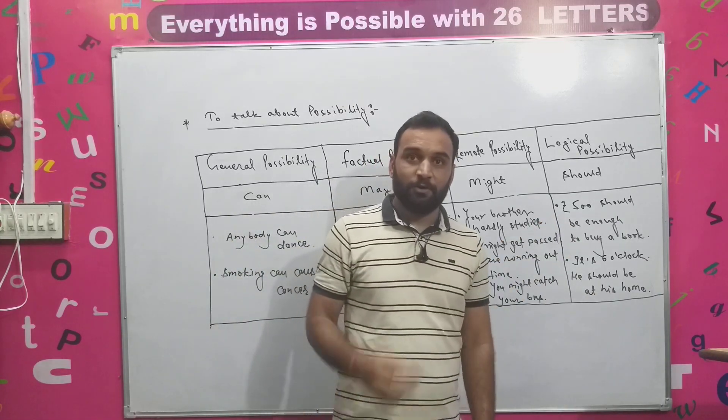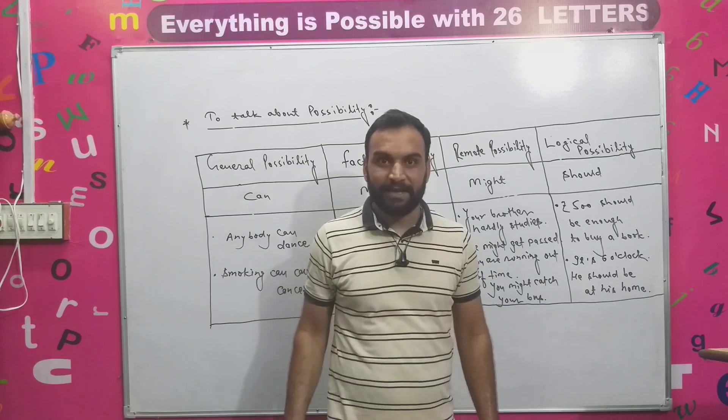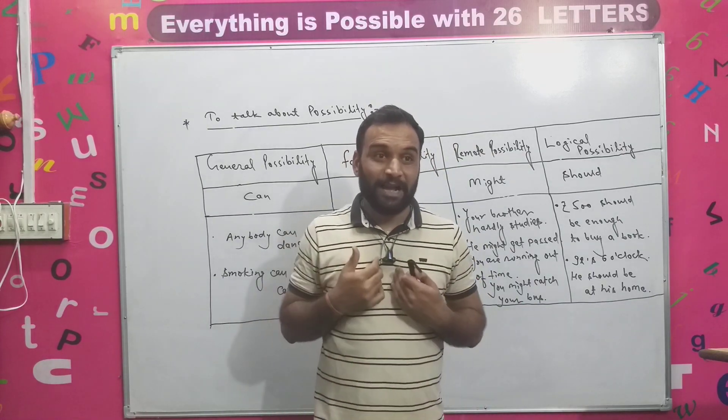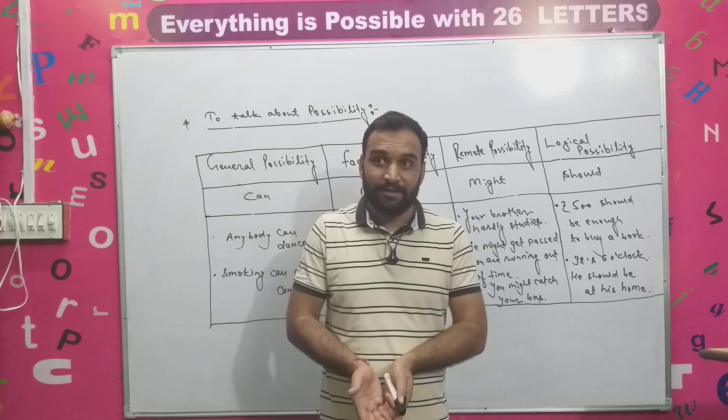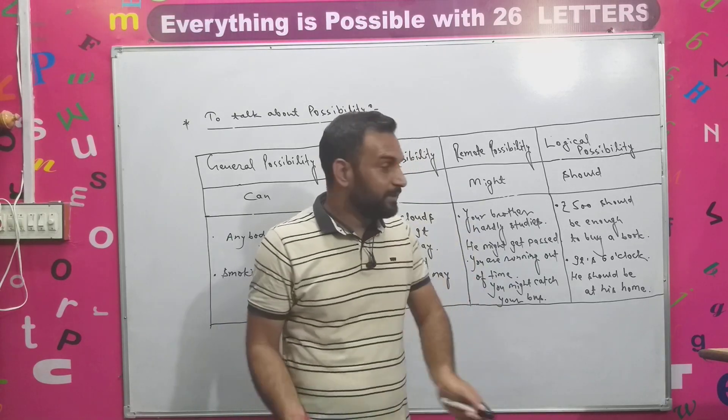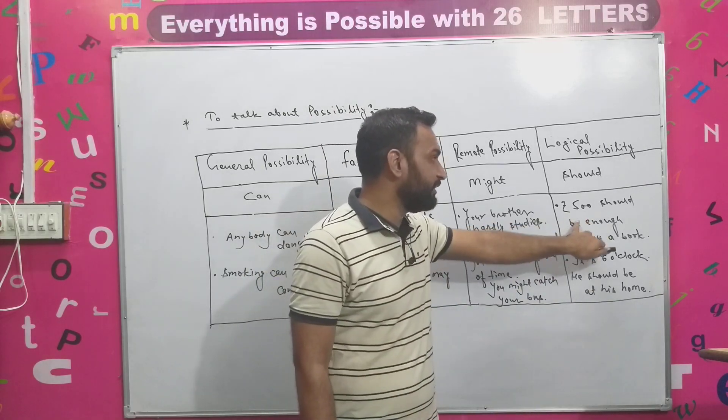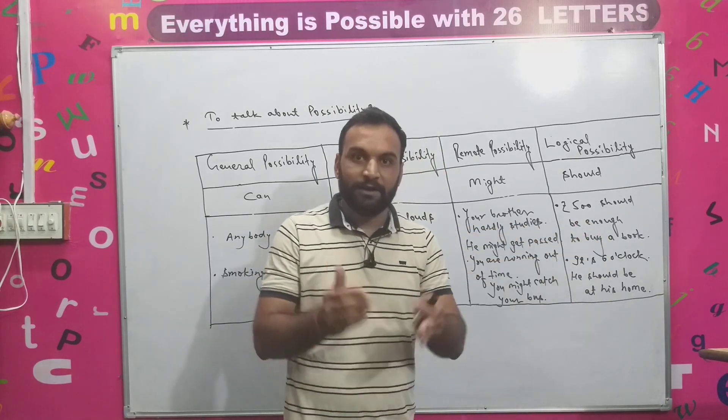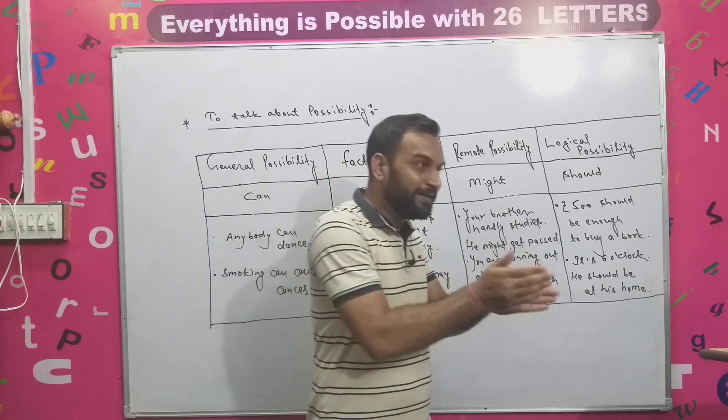Like, somebody has five hundred rupees and they say, I want to buy a book but I need some more money. Then I said, how much you have right now in your pocket? So I have five hundred rupees. I think five hundred rupees should be enough to buy a book. So the example is, rupees five hundred should be enough to buy a book.